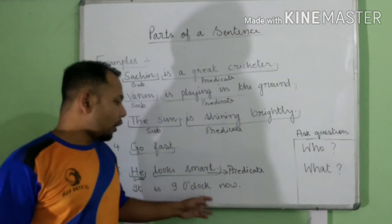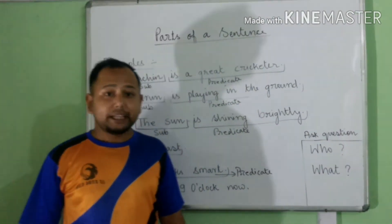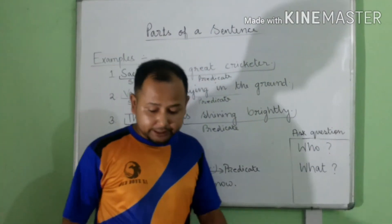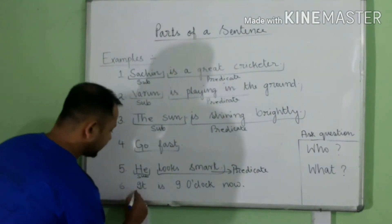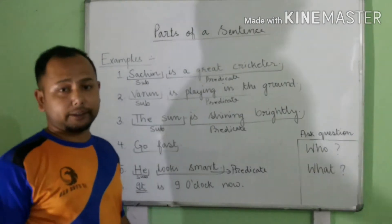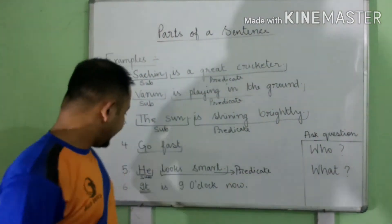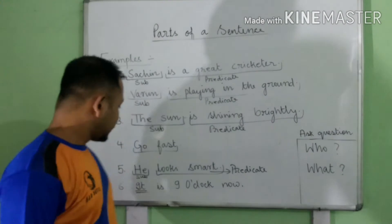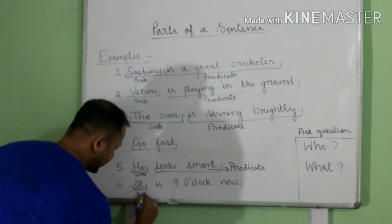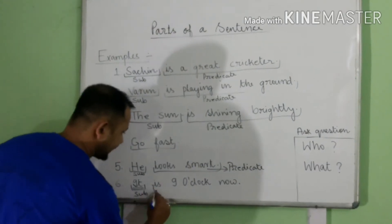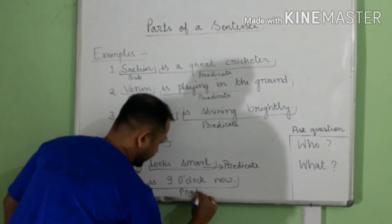Next example: It is 9 o'clock now. In some sentences, it is used as a subject. So in this sentence, it is the subject, and is 9 o'clock now is the predicate.